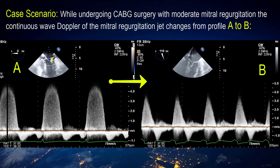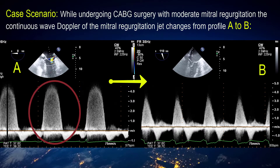Here's the clinical scenario and the stem on which the subsequent question is going to be based. A patient with moderate mitral regurgitation is undergoing coronary artery bypass graft surgery, and during the course of the surgery, the continuous-wave Doppler profile of his mitral regurgitation jet changes from profile A to profile B.